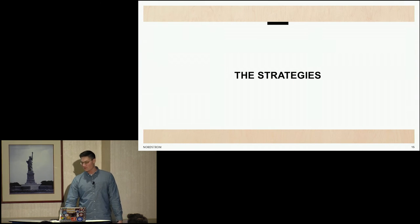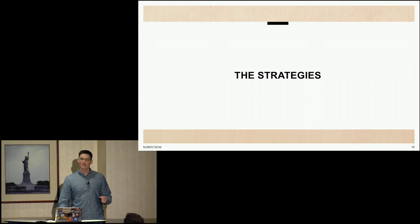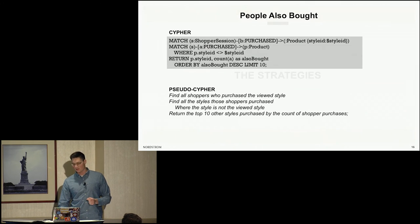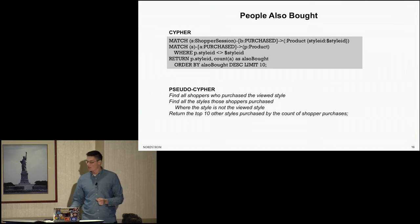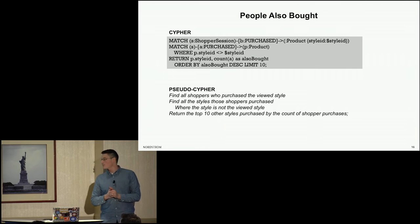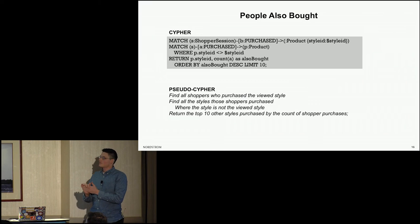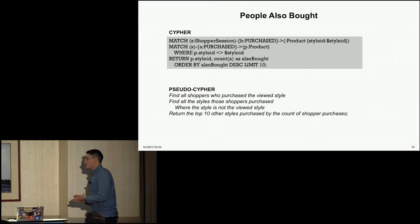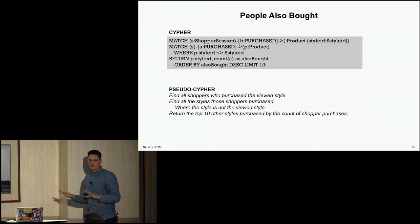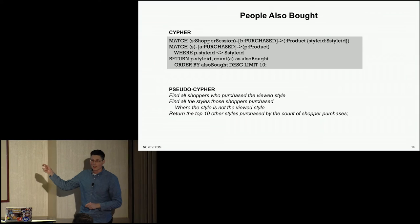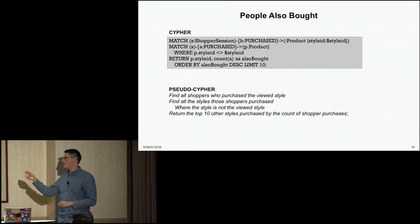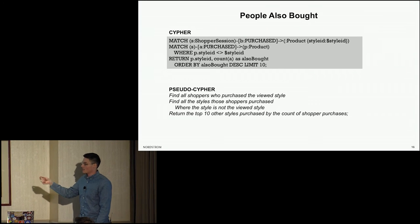Here is our schema with our green nodes being our styles. We have our next view relationship between them — this is one shopper who did a sequential view from this style to this style. For each of our styles, we also have viewed and purchased relationships with different shoppers. Let's get into the strategies. First I'll cover just emulating a very simple people also bought strategy. We have some Cypher here on the screen — if you're a little rusty on Cypher or haven't done it before, we'll get you prepped for your workshops tomorrow.